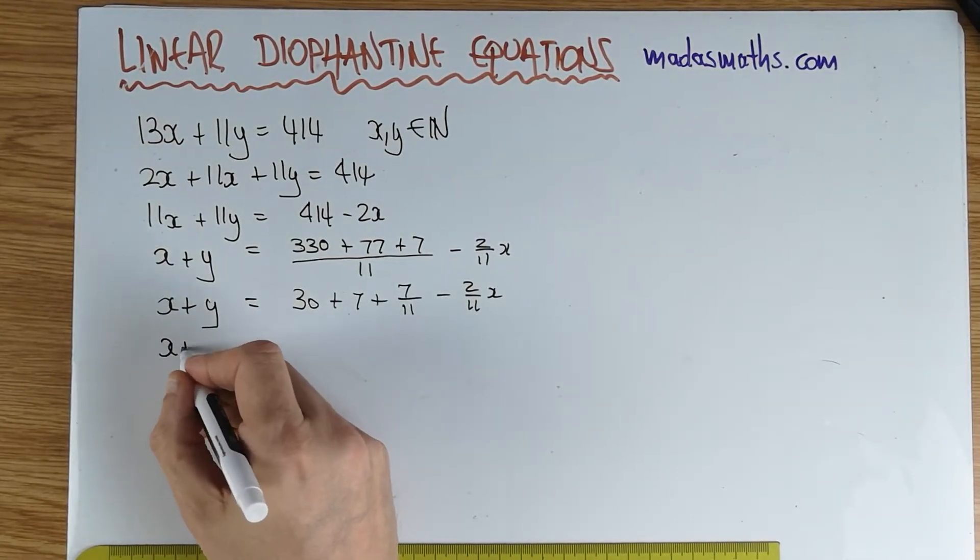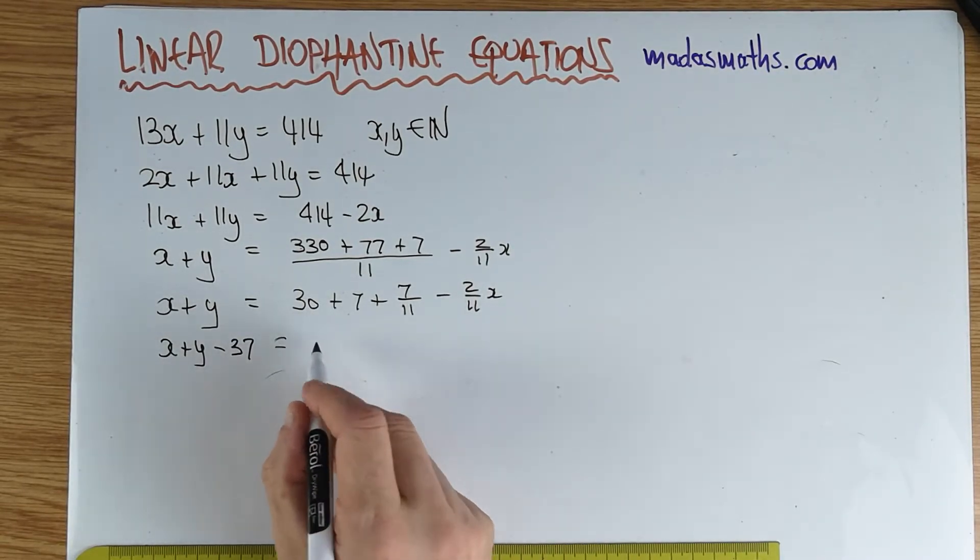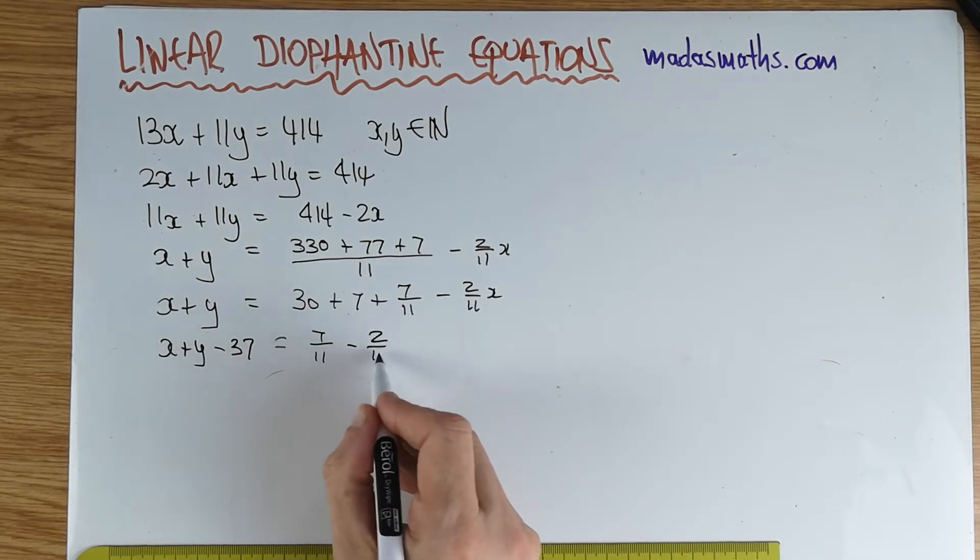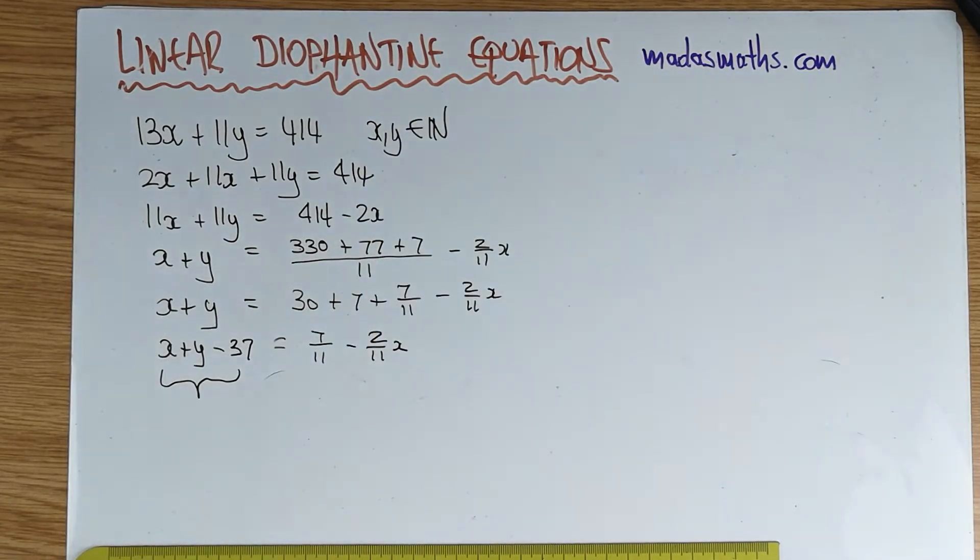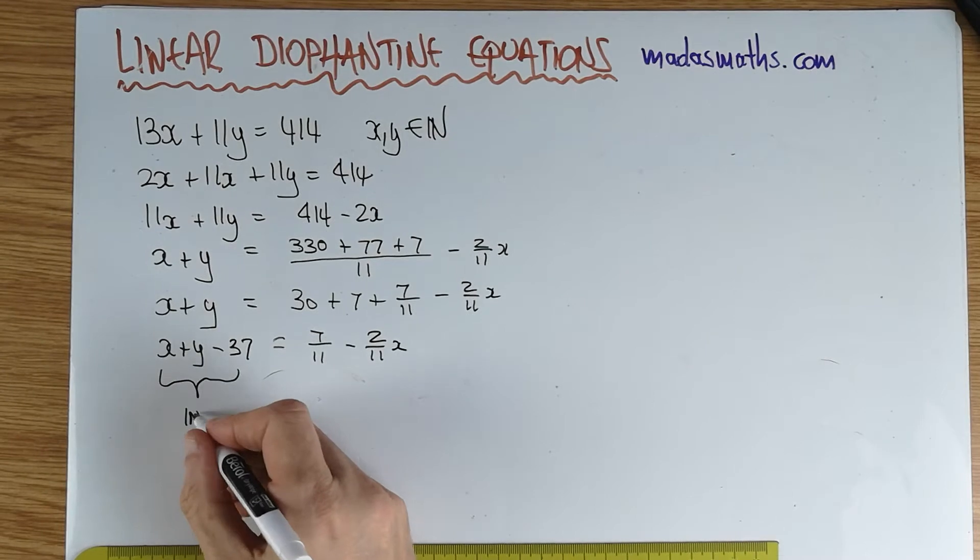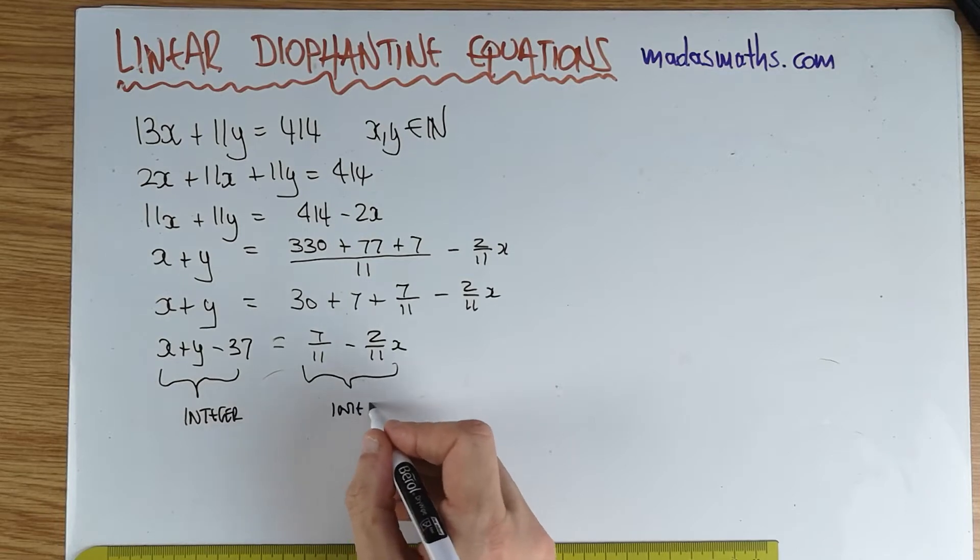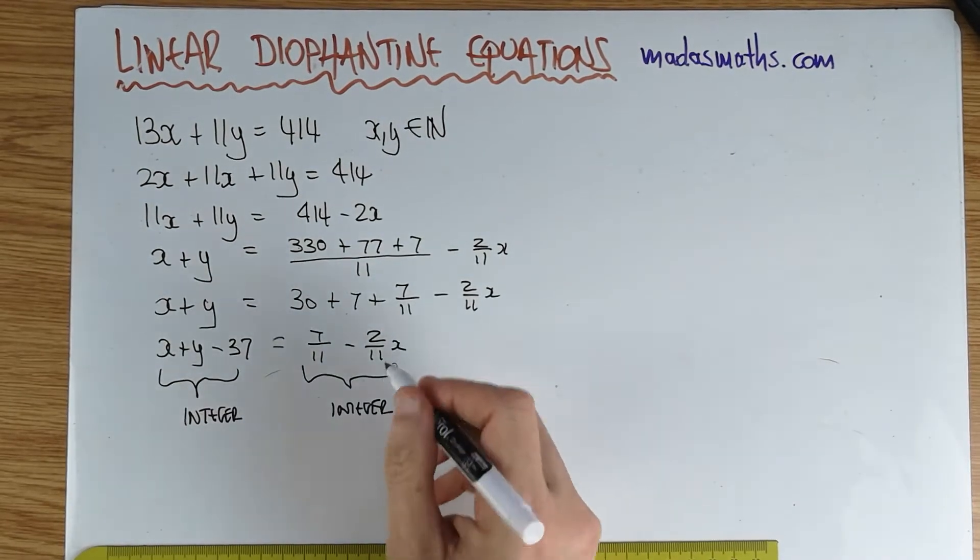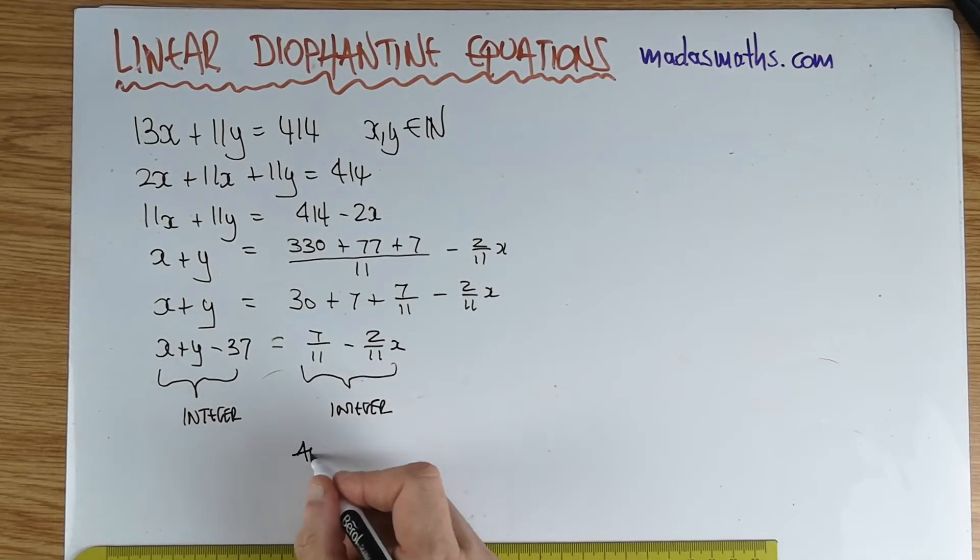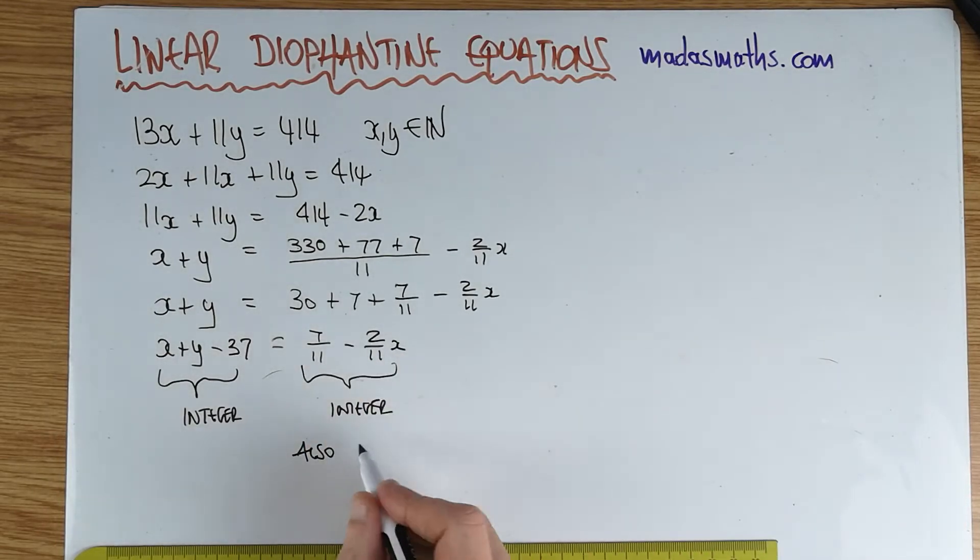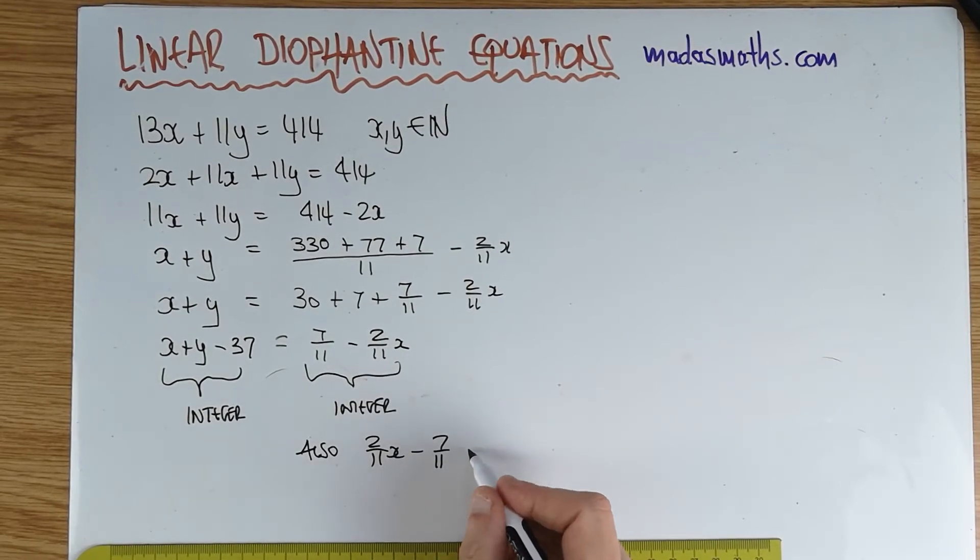So I can actually say x plus y minus 37 is equal to 7/11 minus 2/11 x. Now this, since x and y are natural numbers, take away 37 is going to be an integer. Therefore, that has to be an integer. And I can also say, I just don't like it ugly like that, 2/11 x minus 7/11 is an integer.